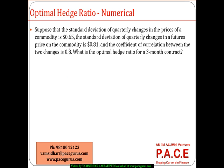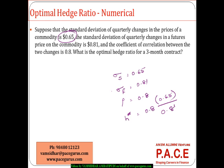Let's look at a numerical example. The standard deviation of quarterly changes in the commodity spot price is 0.65, the standard deviation of quarterly changes in the futures price is 0.81, and the coefficient of correlation is 0.8. The optimal hedge ratio is: H = ρ · (σ_S / σ_F) = 0.8 × (0.65 / 0.81).